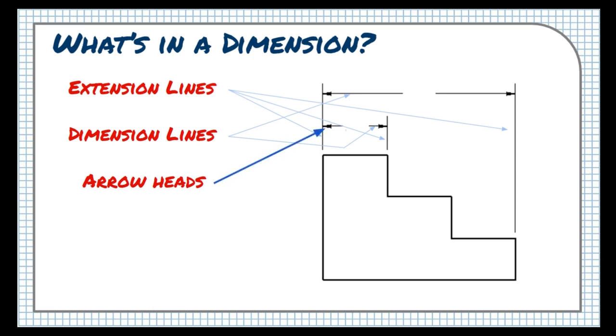The arrowheads on dimension lines should be small, pointy, and filled in. They touch the extension line they refer to exactly, so there's no confusion which edge of the object the dimension is referring to.